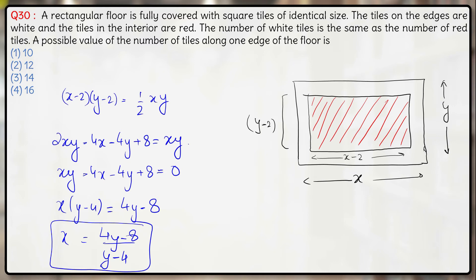So let's check each of the options here. First option is 10. Can y be equal to 10? If y is equal to 10, in that case x will come out to be 40 minus 8 which is 32 upon 10 minus 4 is 6 which is not an integer, 32 by 6 is not an integer, hence option 1 cannot be the correct answer.